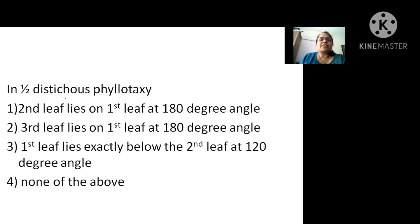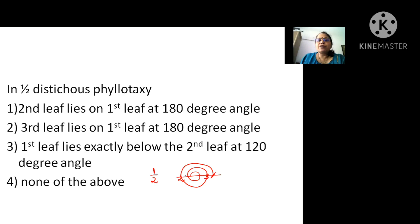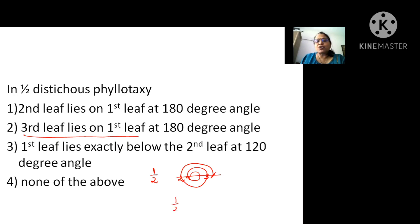In one by two distichous phyllotaxy, you complete one turn and find two leaves covered, with the third leaf on top of the first one. So the first leaf, second leaf, third leaf pattern shows you have covered one turn with two leaves, and the third leaf is on top of the first. The angle is 1/2 multiplied by 360 degrees, giving an angle of divergence of 180 degrees.